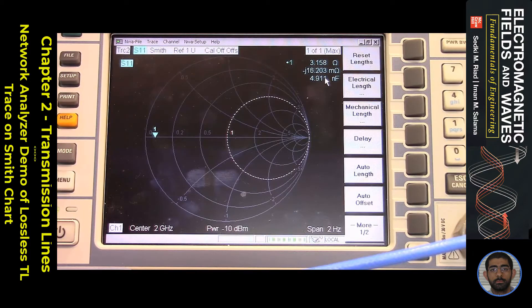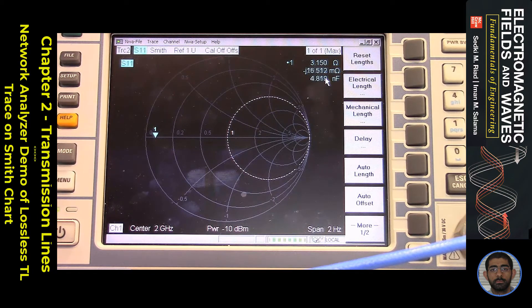Now we have a close-up view on the Smith chart display. The resistive load impedance appears on the negative real axis, which indicates that the value of the resistance is less than Z-naught, which is 50 ohms in this case. Now, I will increase the length of the transmission line and see what happens to the marker on the Smith chart.